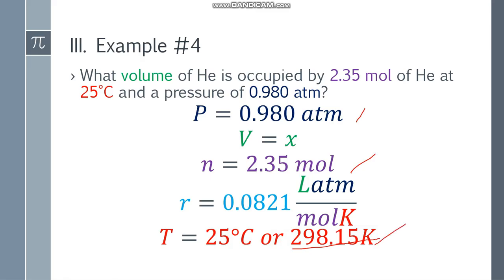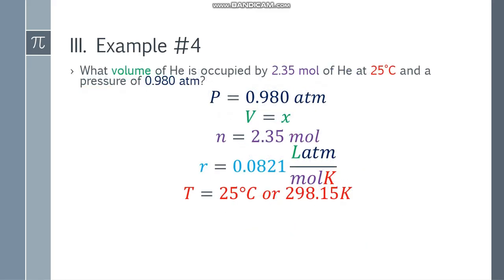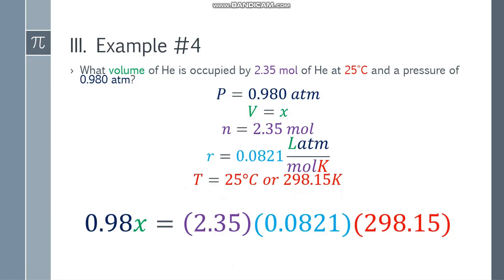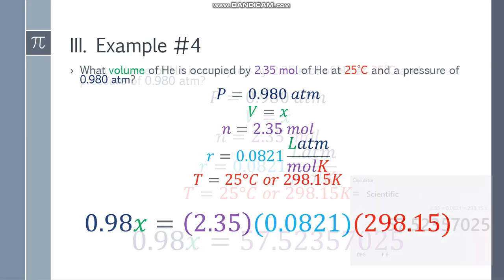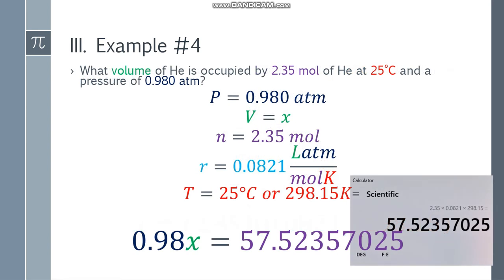ATM, moles at Kelvin na tayo. Gamitin natin yung formula. PV is equal to nRT. Lagyan mo lang mga values. Color coded po siya. 0.98x is equal to 2.35. Multiply mo sa 0.0821. At multiply din sa 298.15. Hindi sa Celsius. Simplify natin siya. Multiply ko yung tatlo. Ang sa calculator daw ay 57.52357025. Divide both sides by 0.98. And x will become 58.6975.